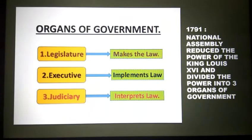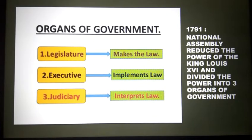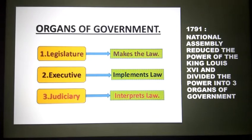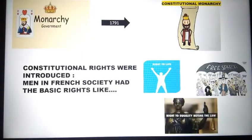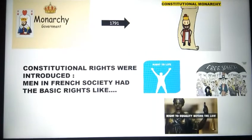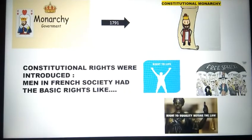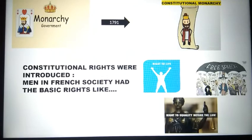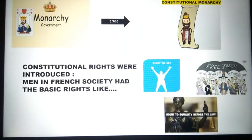In 1791, the National Assembly gradually reduced the power of King Louis. They decided that power should be divided into three organs of the government: the legislature, the executive, and the judiciary. France, being a monarchy, turned into a constitutional monarchy in 1791. With this, a few constitutional rights were introduced for men, such as the right to life, freedom of speech, and the right to equality before law.